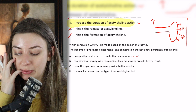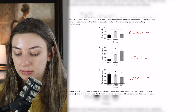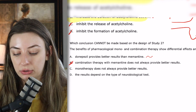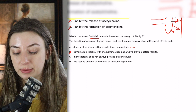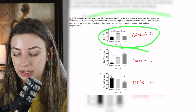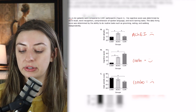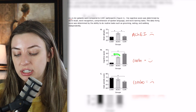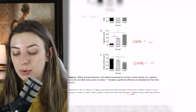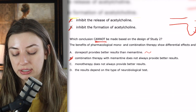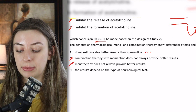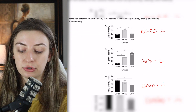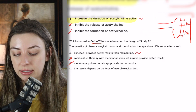Answer B says 'combination therapy with memantine does not always provide better results' — that was true, we saw it in the results, so it's a true statement and therefore wrong for this 'cannot' question. Answer C says 'monotherapy does not always provide better results' — also true, since monotherapy had more brain atrophy and didn't perform as well in cognitive score. Answer D says 'results depend on the type of neurobiological test' — absolutely true, we saw different results with different tests. So A is the best answer.